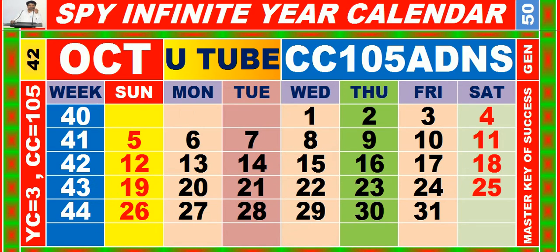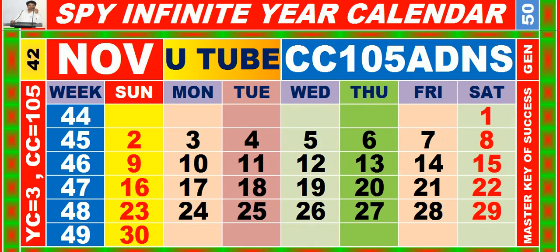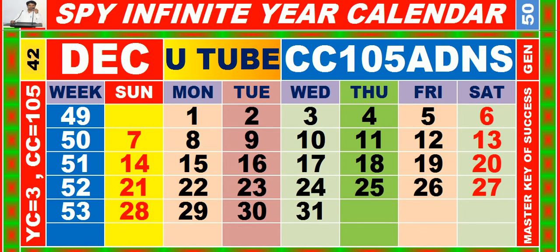Calendar for the month of September having calendar code equal to 105. Calendar for the month of November having calendar code equal to 105. Calendar for the month of December having calendar code equal to 105.